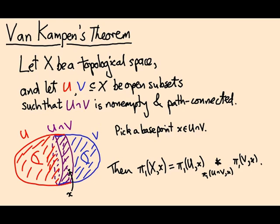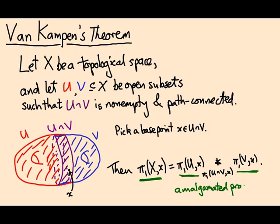Van Kampen's theorem says that if you have a topological space X, which you can write as a union of two open subsets U and V, whose intersection is non-empty and path-connected, then you can compute the fundamental group of X in terms of the fundamental groups of U and V by some purely algebraic procedure. More precisely, if we pick a base point x in the intersection, then the fundamental group of X based at x is given by the amalgamated product of the fundamental group of U at x with the fundamental group of V at x, amalgamated over the subgroup coming from the fundamental group of the intersection.